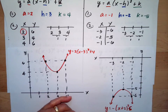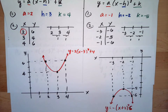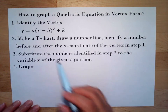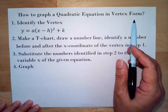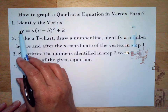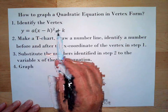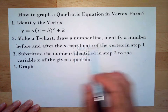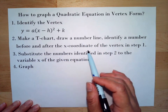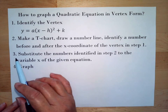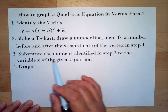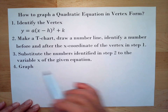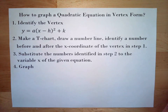Let's recap the steps for graphing a quadratic equation in vertex form. Step 1: identify the vertex from the equation. Step 2: make a t-chart, draw a number line, and identify a number before and after the x-coordinate of the vertex. Step 3: substitute those numbers into the variable x of the equation. Step 4: graph the resulting points.